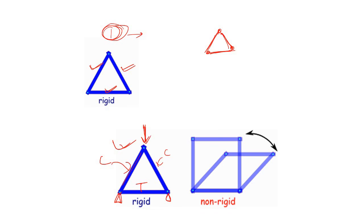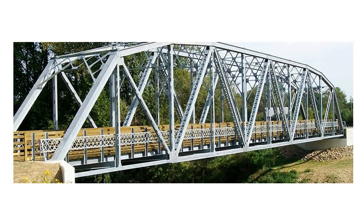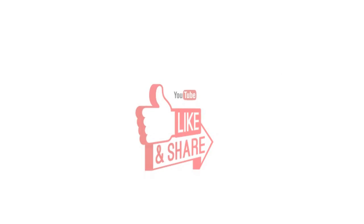Because triangular shape is rigid, even after load is applied the shape will not collapse. Instead, the members will be compressed or tensed based on the nature of loading, but the shape remains intact. With a rectangular shape, however, the shape collapses because it is non-rigid and four fixed lengths can form infinite rectangles. That is why all basic units in a truss are triangular.